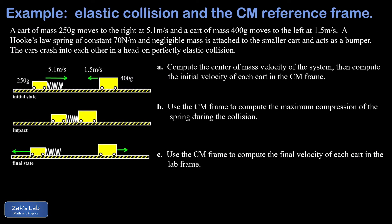In this video we're analyzing a perfectly elastic collision between two carts that bounce off each other using a Hooke's law spring. The real emphasis is to use the center of mass reference frame. In part a we find the center of mass velocity and transform the initial velocities into that frame. In part b we find the maximum spring compression, and in part c we find the final velocities in both the CM frame and the lab frame.